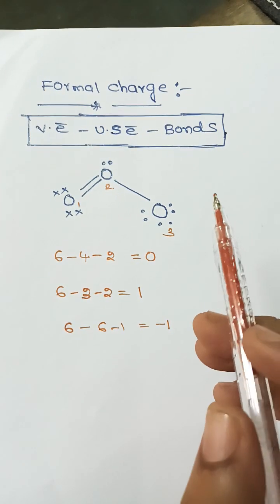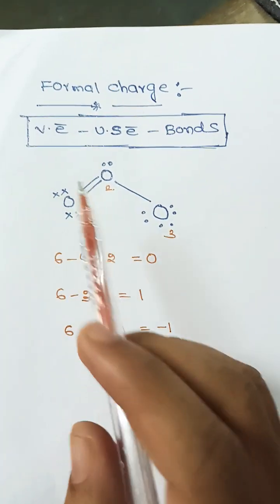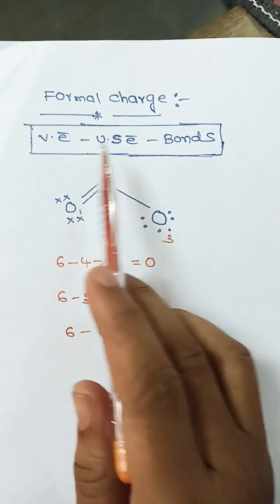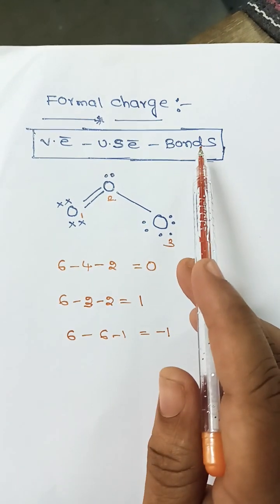A simple way to calculate the formal charge of any atom. The formula is valency electrons minus unshared electrons minus number of bonds surrounded by the atom.